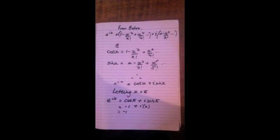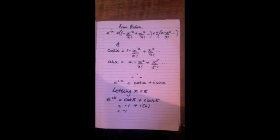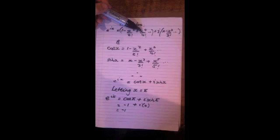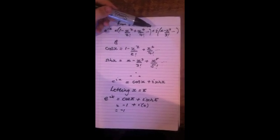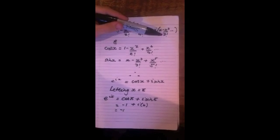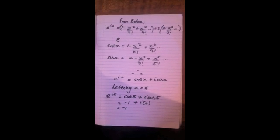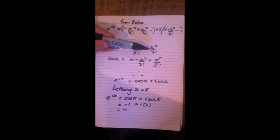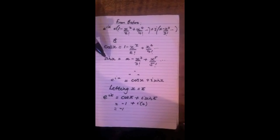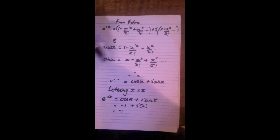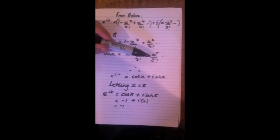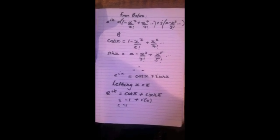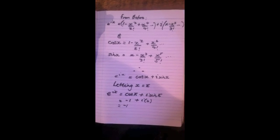The final step is to use the information proven previously to show that Euler's Identity holds. It was shown using the Maclaurin series expansion that e to the ix equals (1 minus x squared on 2 factorial plus x to the 4 on 4 factorial, to infinity) plus i times (x minus x cubed on 3 factorial, to infinity). It was also shown that cos x equals that even-powered series, and sin x equals that odd-powered series. Therefore, putting this together, it can be seen that e to the ix in fact equals cos x plus i sin x.